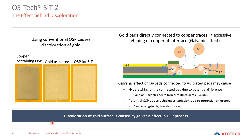Question: Regarding OSP thickness, which is the key factor — immersion time, temperature, or pH — and which has the most dramatic influence? The main major impact comes from the immersion time. However, pH also needs to be controlled, as does temperature. All three need to be controlled and kept in line.